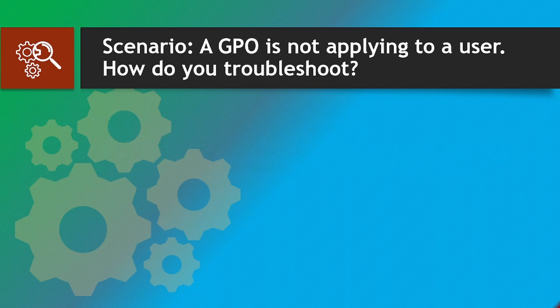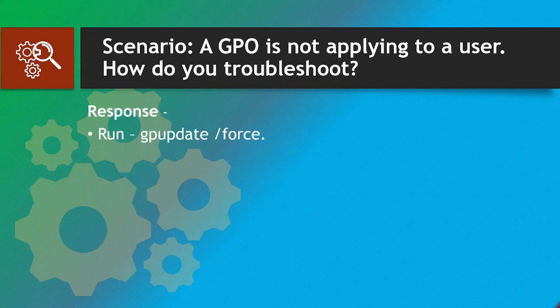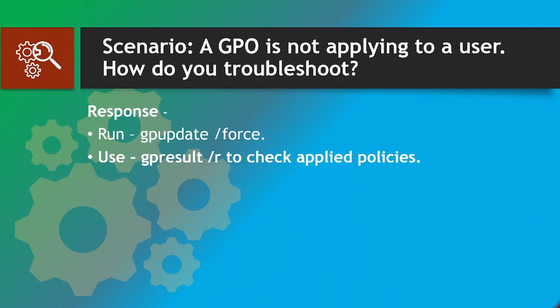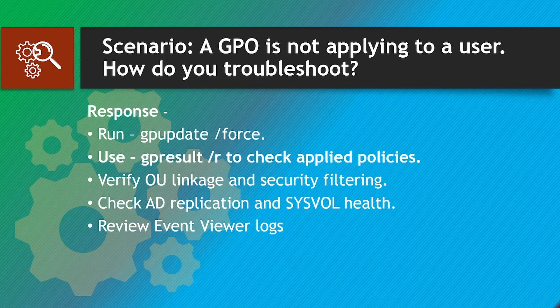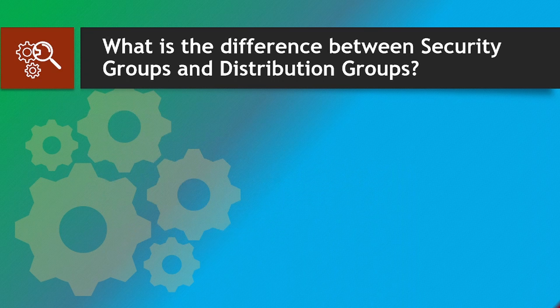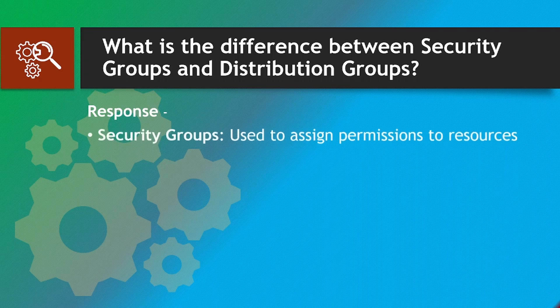Scenario: A GPO is not applying to a user — how do you troubleshoot? Response: Run 'gpupdate /force', use 'gpresult /r' to check applied policies, verify OU linkage and security filtering, check AD replication and SYSVOL health, and review Event Viewer logs.